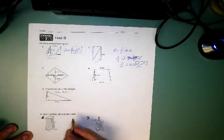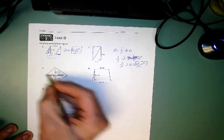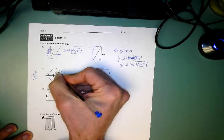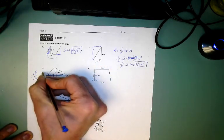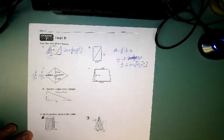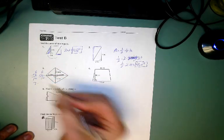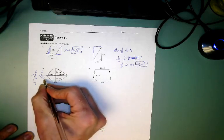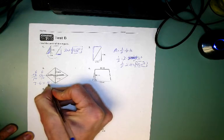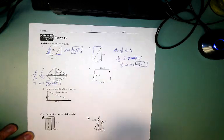A kite has a pretty cool formula where you're going to get half of the diagonals. So this diagonal is 6 plus 8, which is 14. This one is 6 plus 6, which is 12.